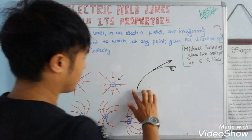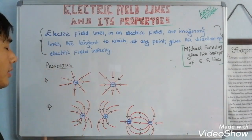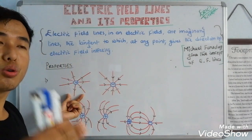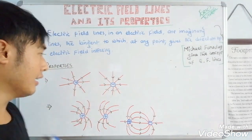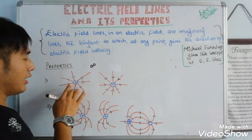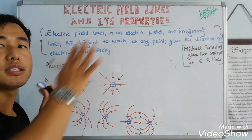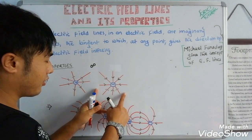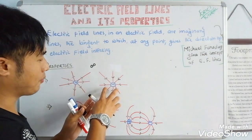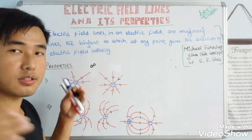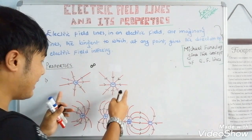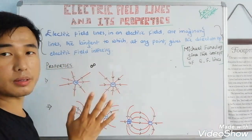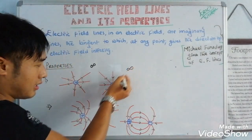Property number one: electric field lines always start from a positive charge and go to infinite distance. If there is a negative charge present, the field lines start from the positive charge and end at the negative charge.